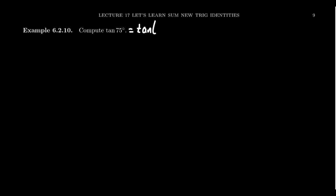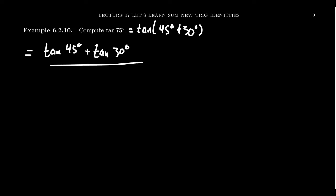I'll leave the angle difference details to the viewer. So could we do tangent of 75 degrees? Yes — tangent of 75 degrees, we're going to treat it as tangent of 45 degrees plus 30 degrees. And using the angle sum identity, we're going to get tangent of 45 degrees plus tangent of 30 degrees, all over 1 minus tangent of 45 degrees times tangent of 30 degrees.